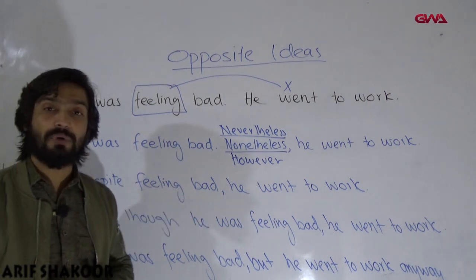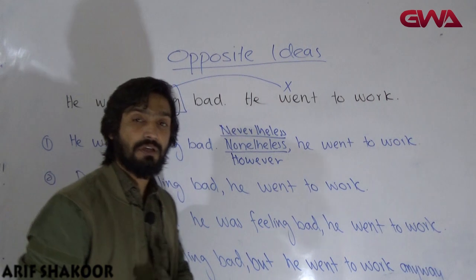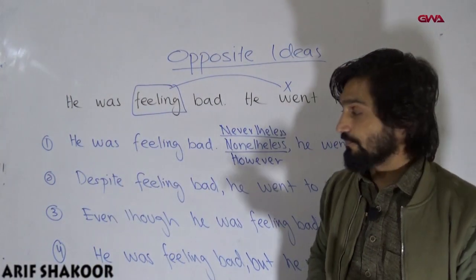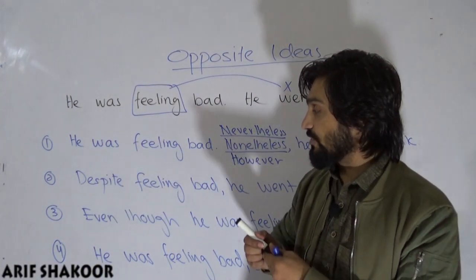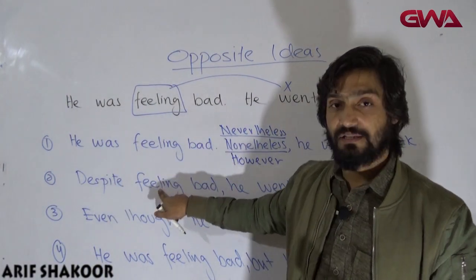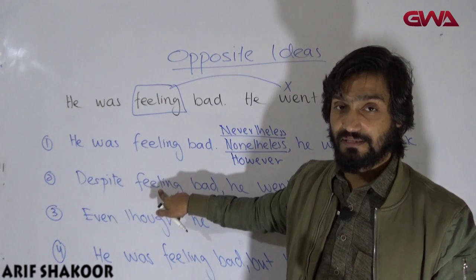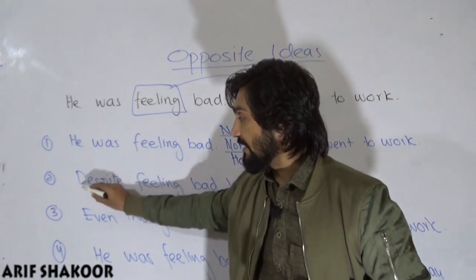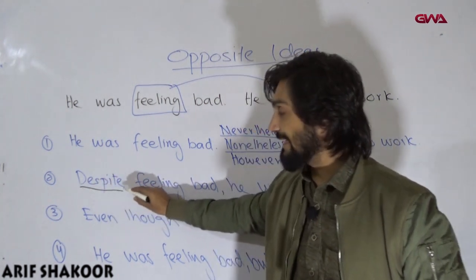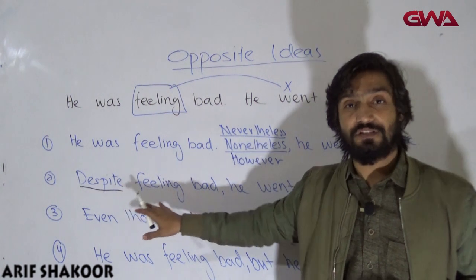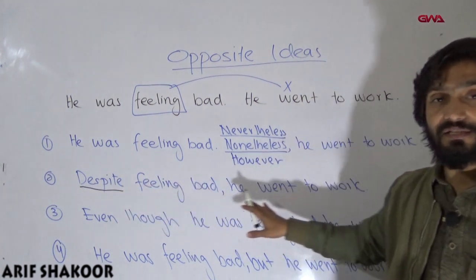Number two, using prepositions: 'Despite feeling bad, he went to work.' Despite is a preposition, and a preposition can be followed by a gerund or a noun. We can also use 'in spite of': 'In spite of feeling bad, he went to work.'